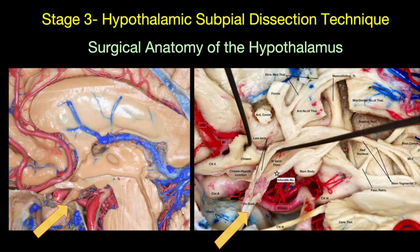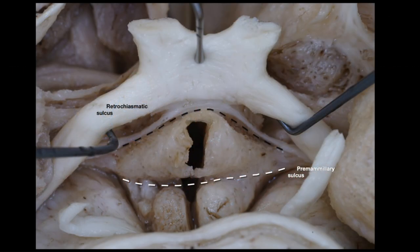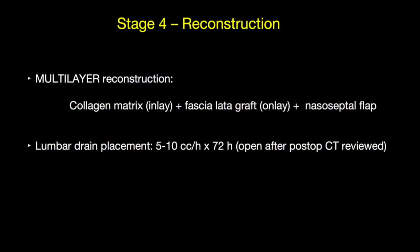The next stage is the key hypothalamic sub-pial dissection technique, which allows us to preserve the hypothalamus and dissect the tumor at the hypothalamic attachment. Finally, the multilayer reconstruction uses collagen, fascia lata, nasoseptal flap, and the key addition of a lumbar drain placement for three days to prevent CSF leakage.